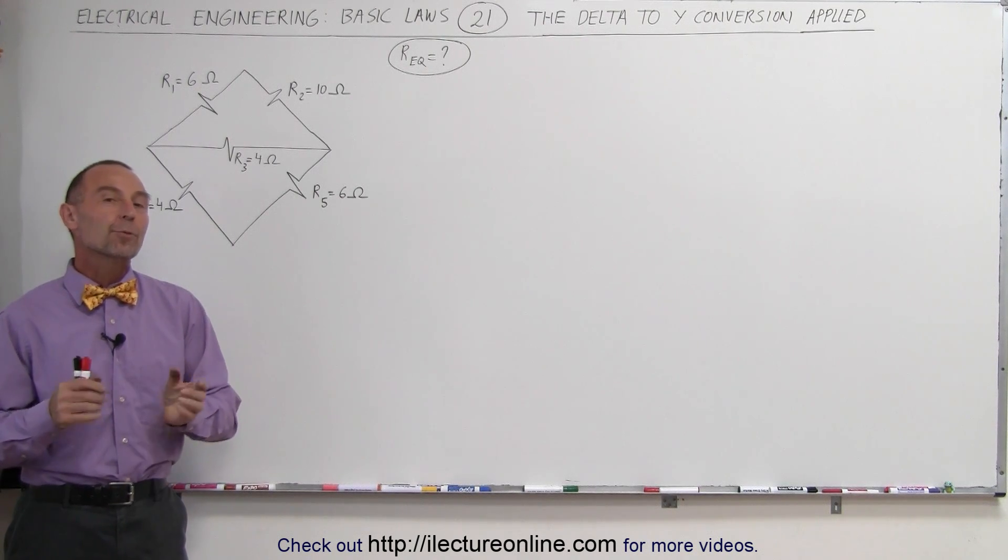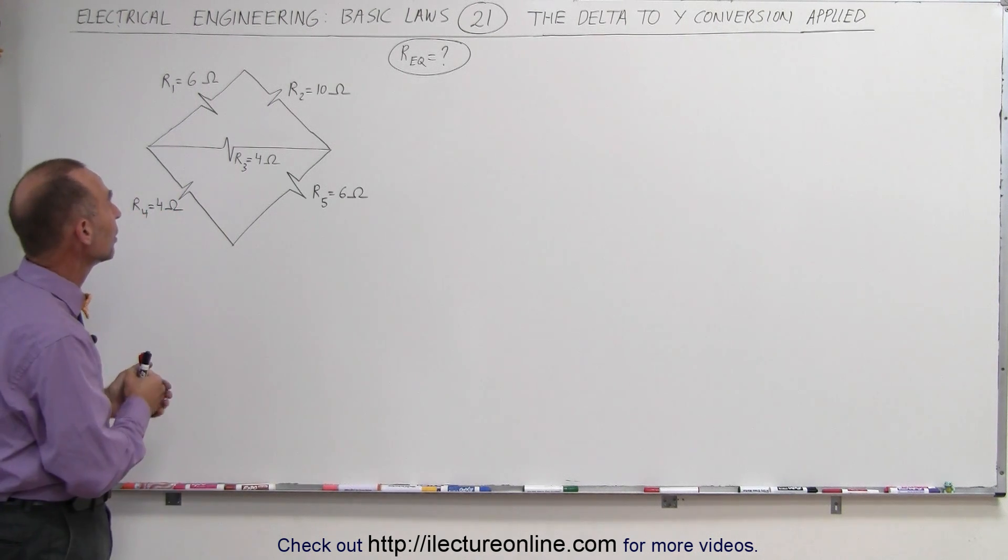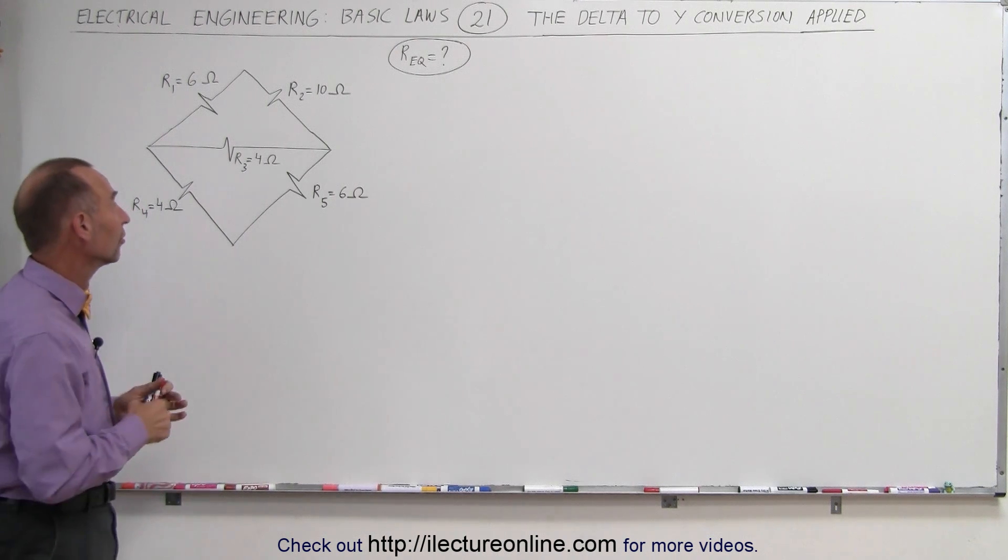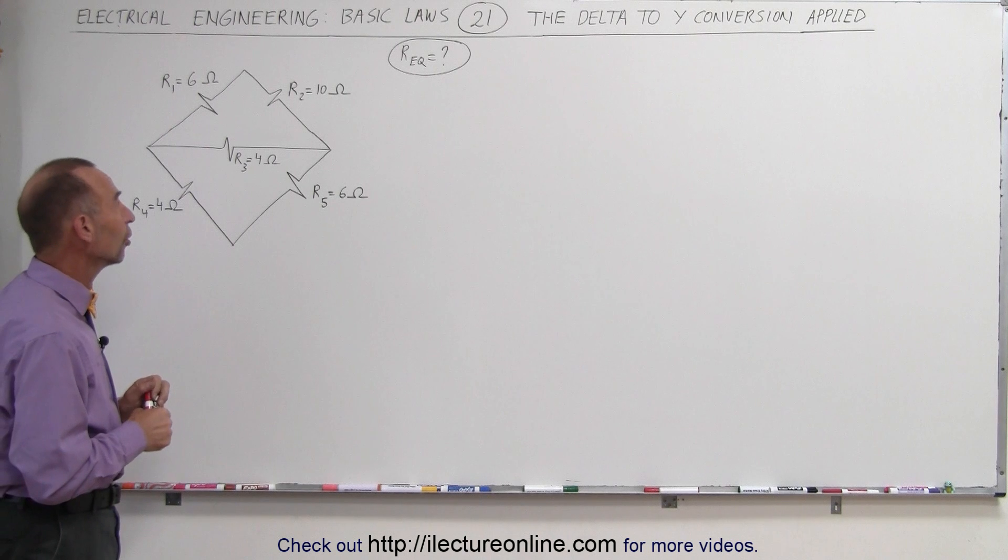Welcome to ElectronLine. In this video we're going to actually work out the delta to Y conversion. We have a bridge circuit here. We're going to convert that into a format that we can solve for the equivalent resistance. Without doing the delta to Y conversion it would be very difficult to do so.